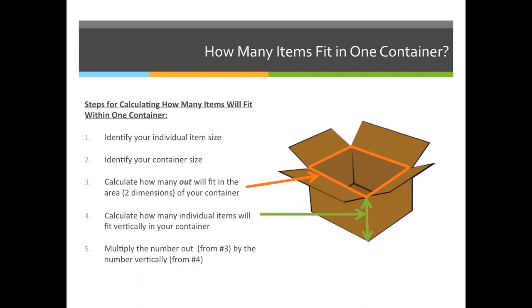Once we have the answers to steps 1 and 2, we will calculate how many items fit in the area of two dimensions of your container — basically, if you put one row of books at the bottom of the box, how many books could we fit? The "number out" is a standard printing industry term for calculating how many items fit on a given surface, like how many postcards fit on a press sheet. It's an important concept because our next lectures will focus on calculating how many press sheets we need.